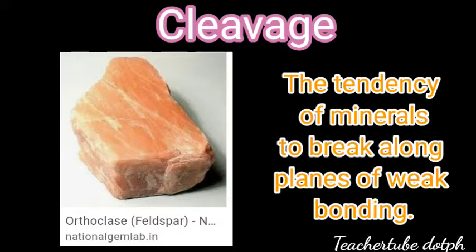Cleavage is the tendency of minerals to break along planes of weak bonding. It is described by the number of planes exhibited and the angles at which they meet. You can see here the sample rock — it is a type of feldspar called orthoclase. You can see the planes of weak bonding; when this mineral breaks, that is called cleavage.